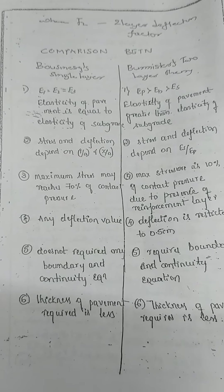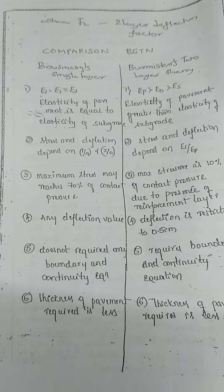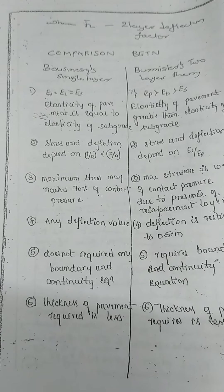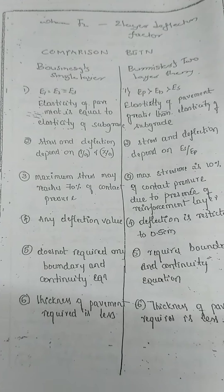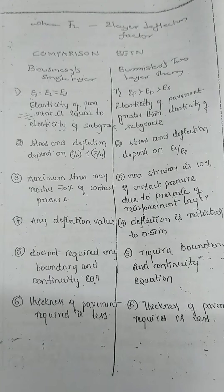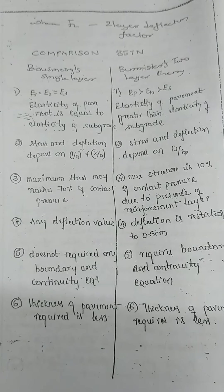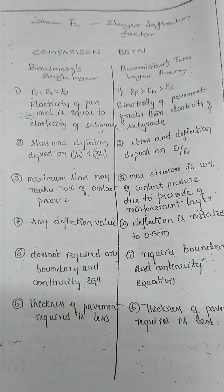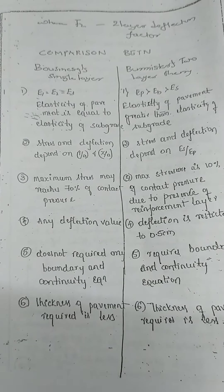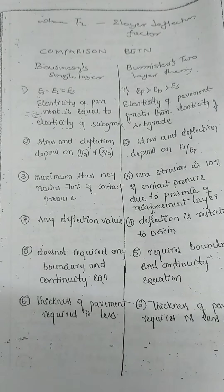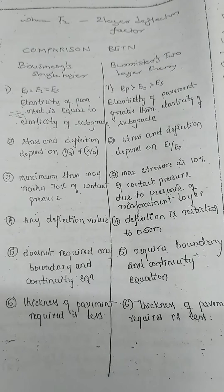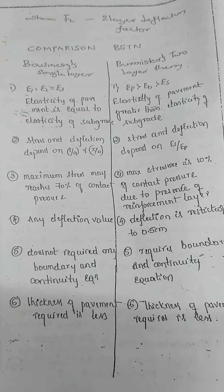Fifth difference: Boundary and continuity equations are not required in Bosnick's theory, whereas in Burmester's theory they are required. Sixth difference: The thickness of pavement required is less in Bosnick's theory, and thickness is also less in Burmester's two-layer theory.